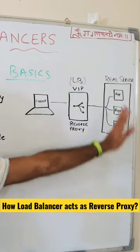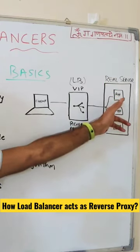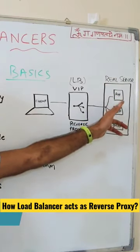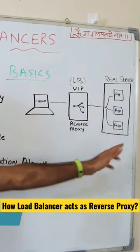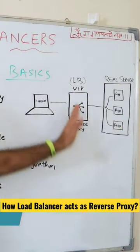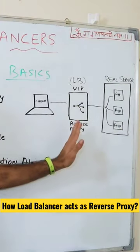This layer is called real servers. You can see that we have app servers deployed here within three nodes, and this is where we have a virtual IP.